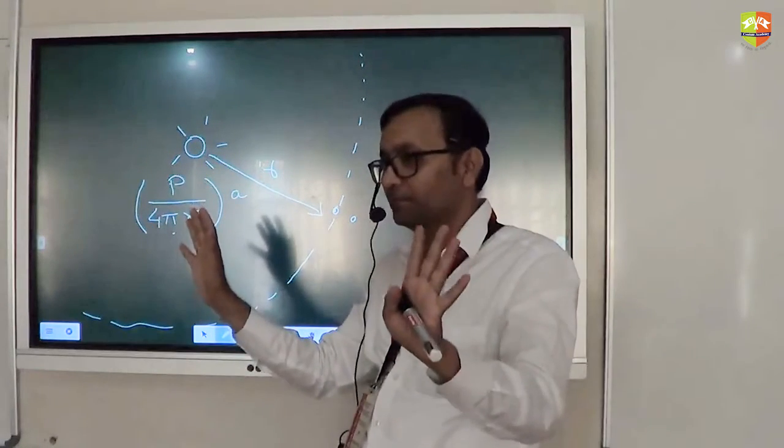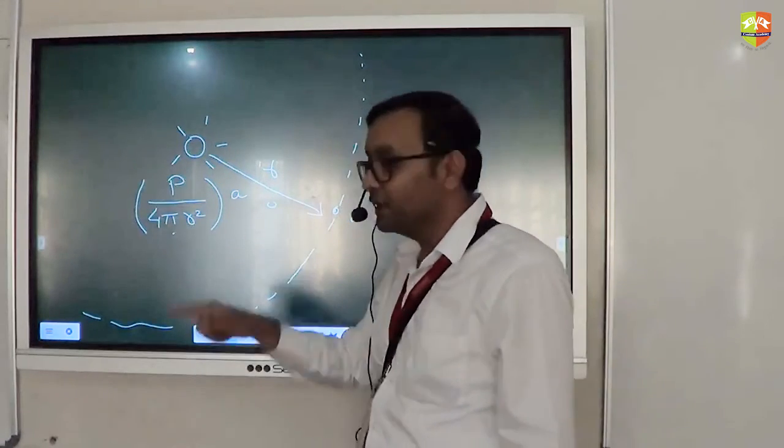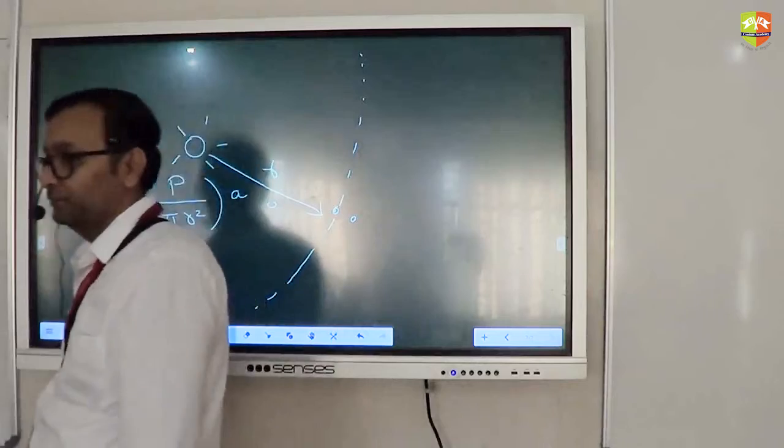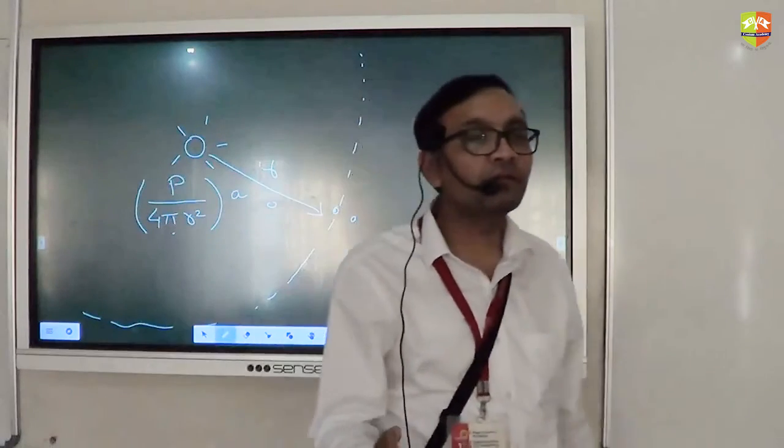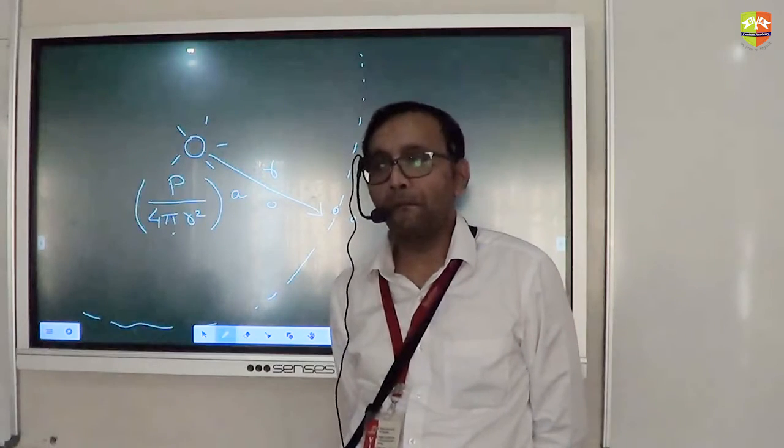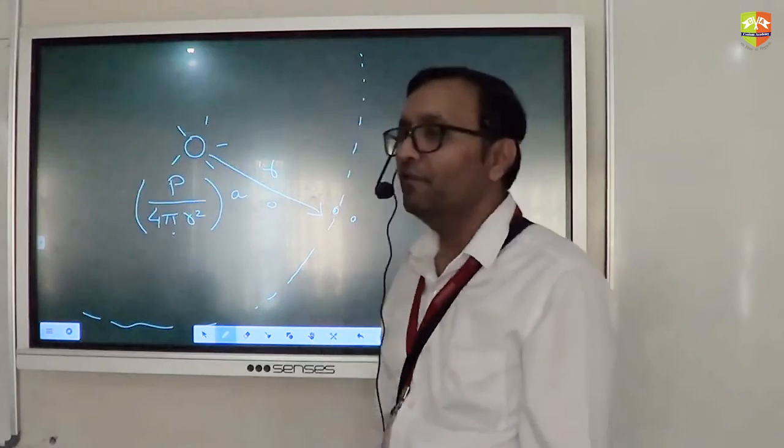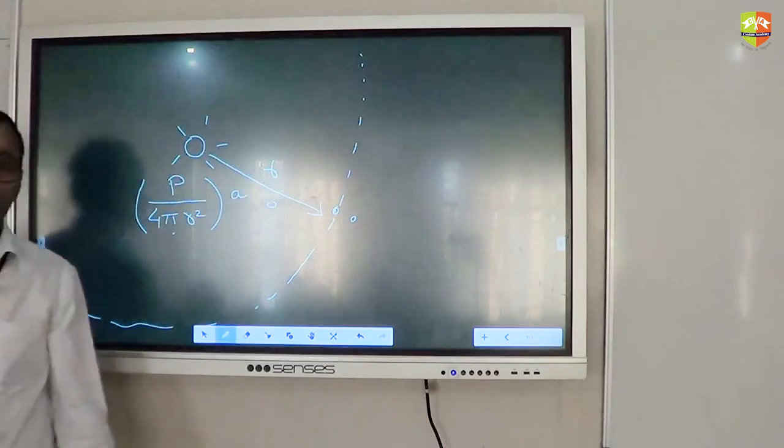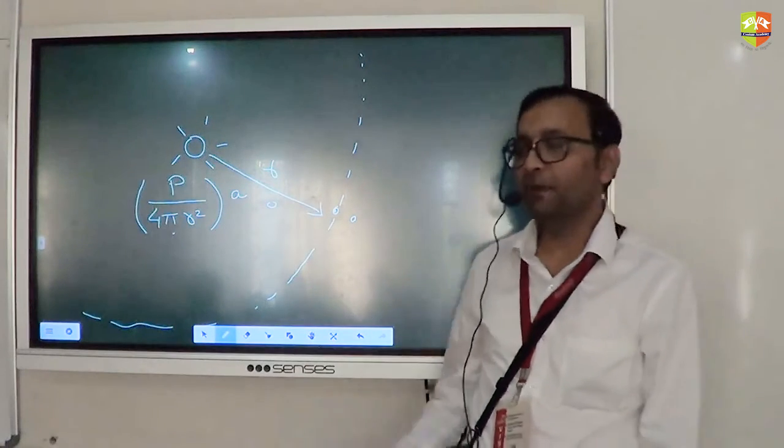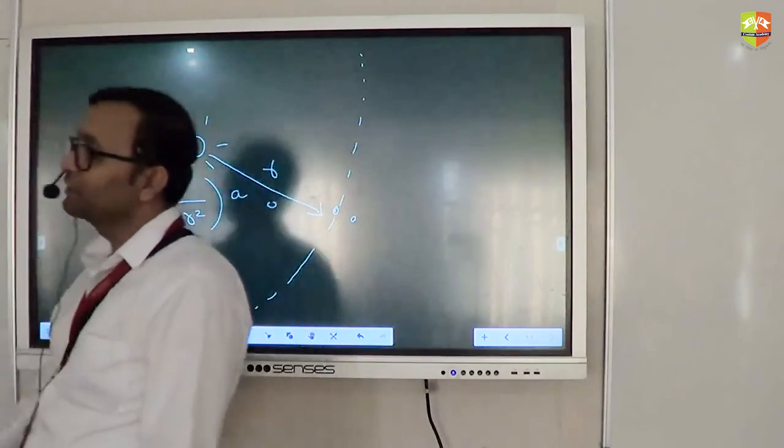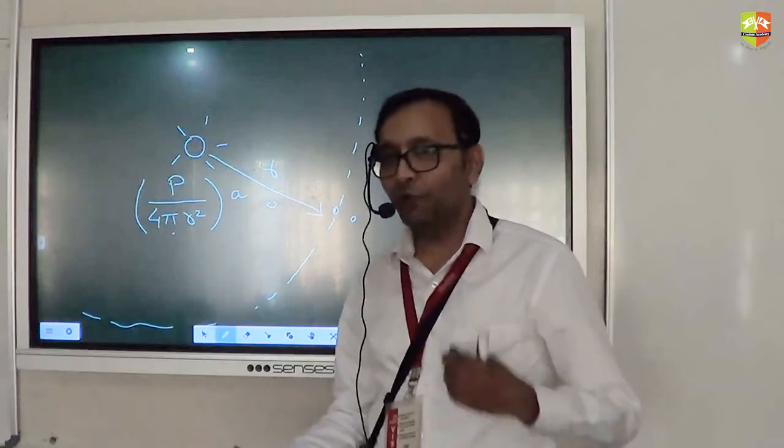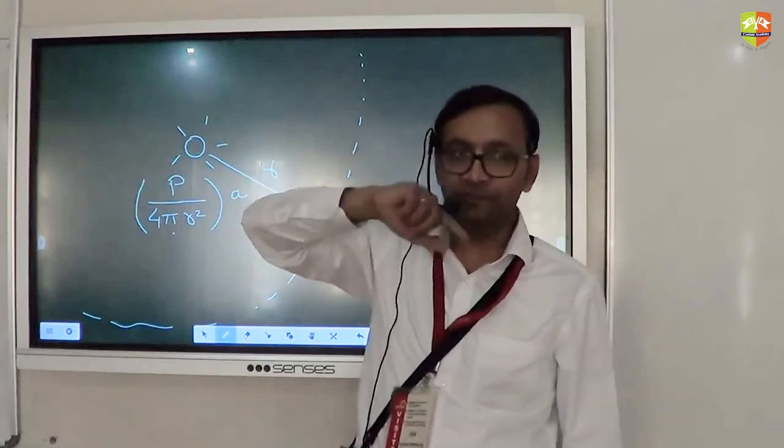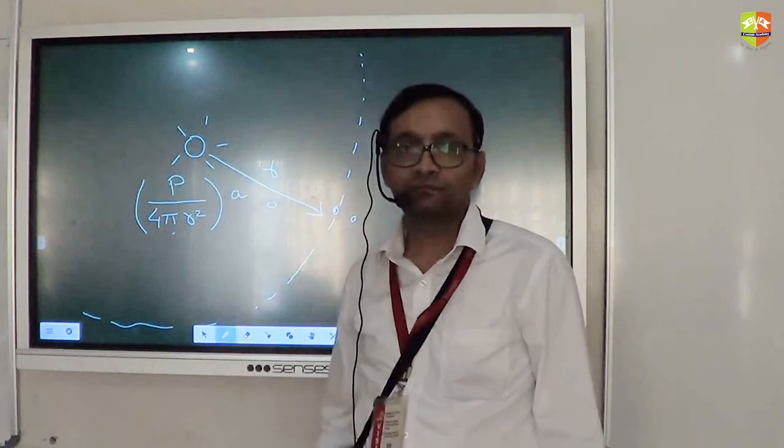Should I proceed? Power per unit area. Please write down: intensity of a wave is power per unit area. And in bracket you write down: power is proportional to amplitude square. Just for you to know, more is the amplitude, more will be the power delivered. In fact, amplitude square times. If you double the amplitude, power becomes four times.